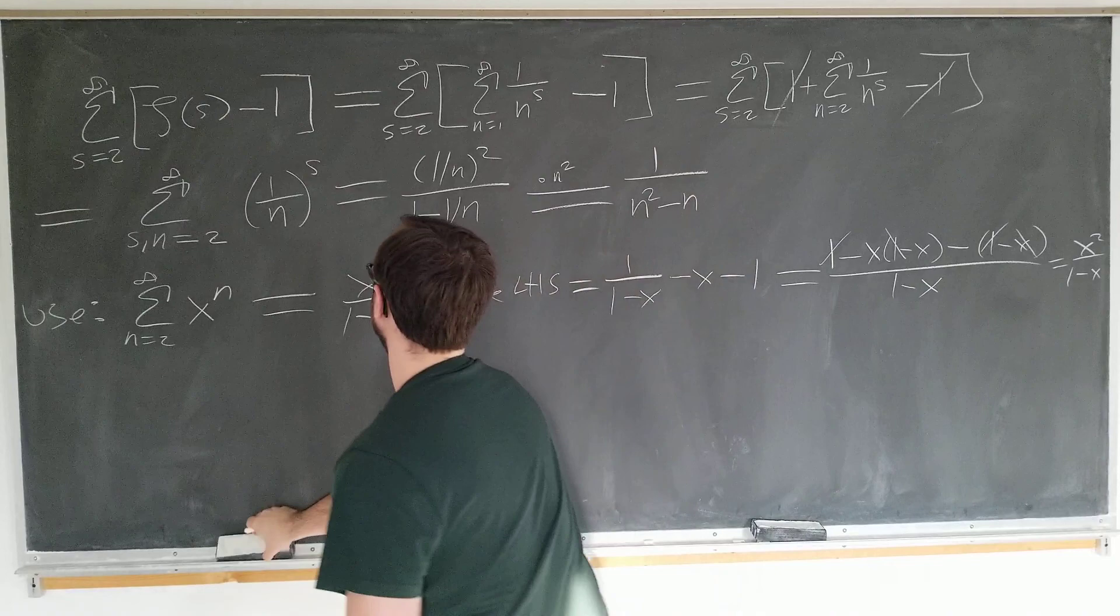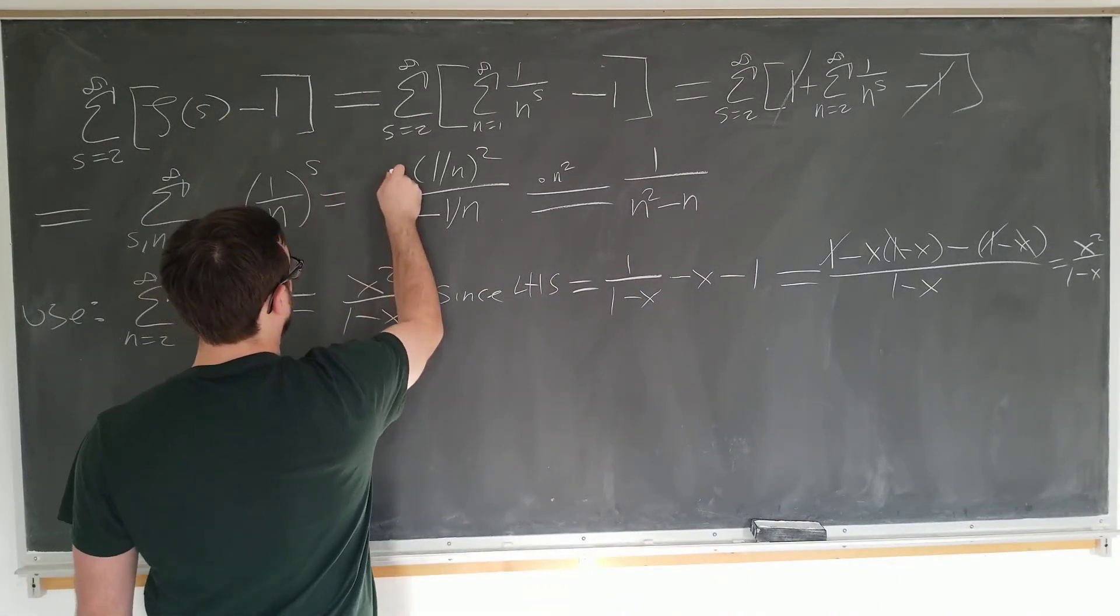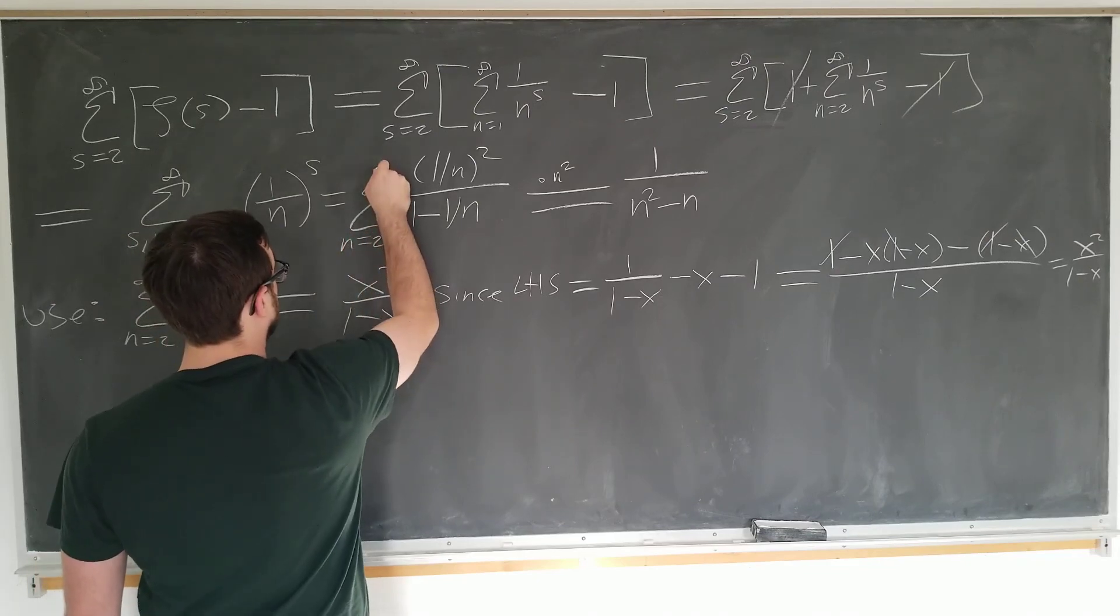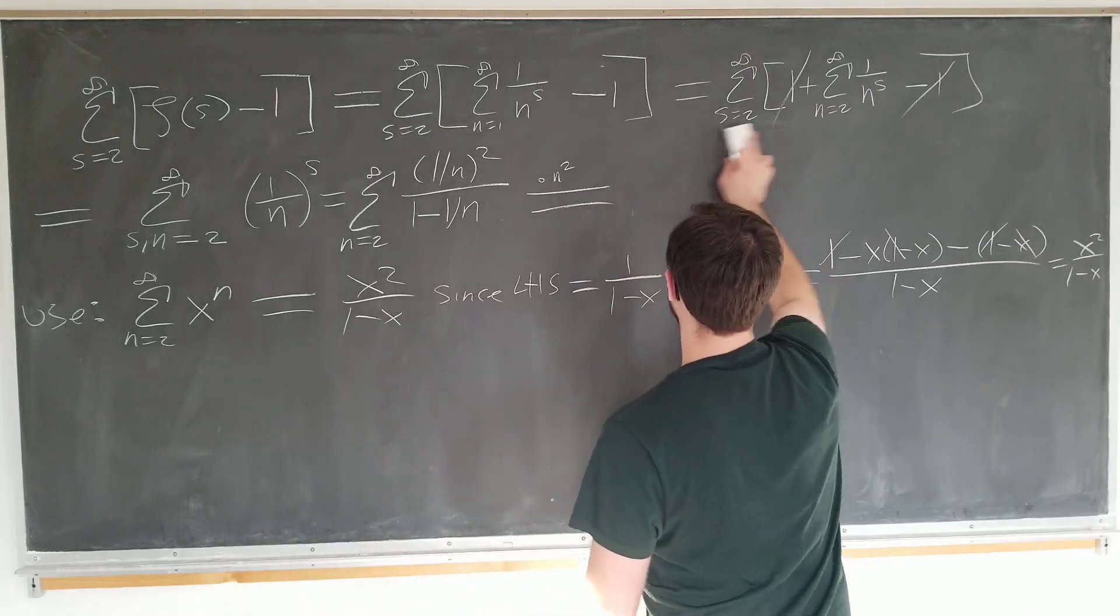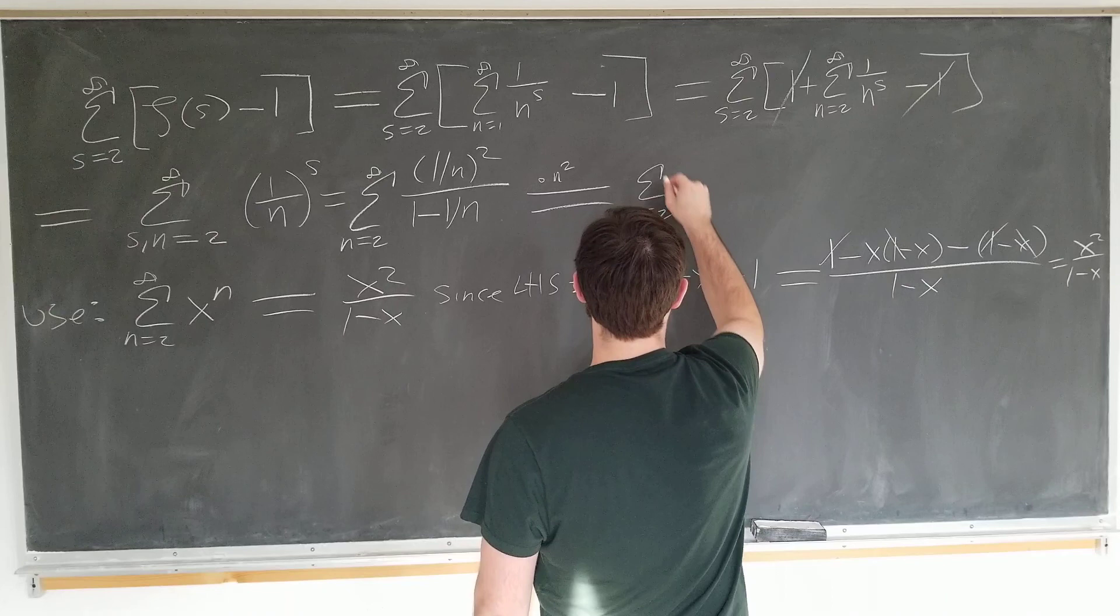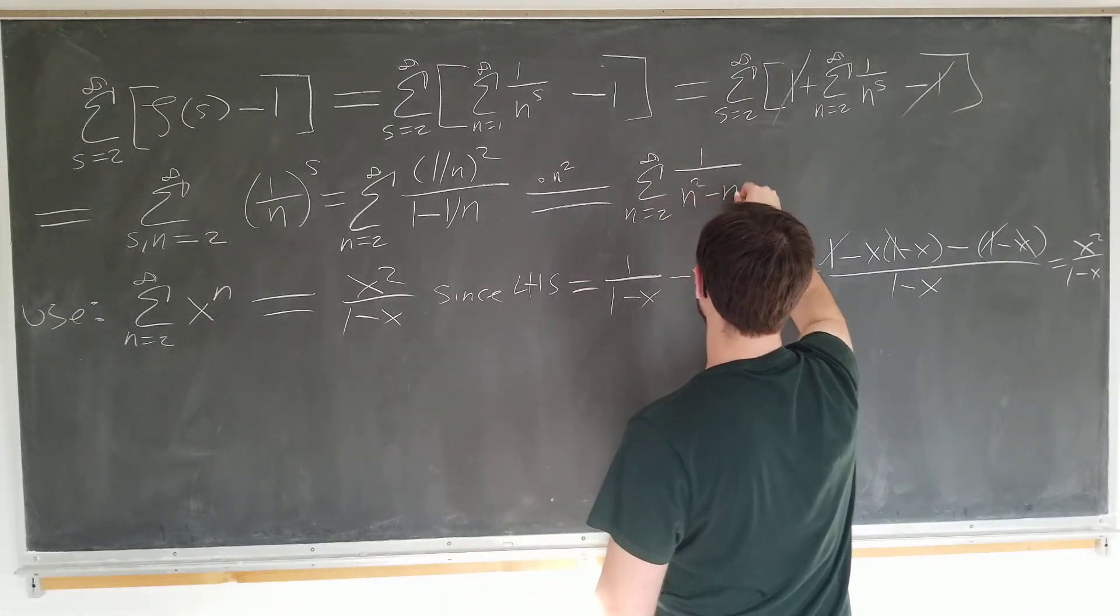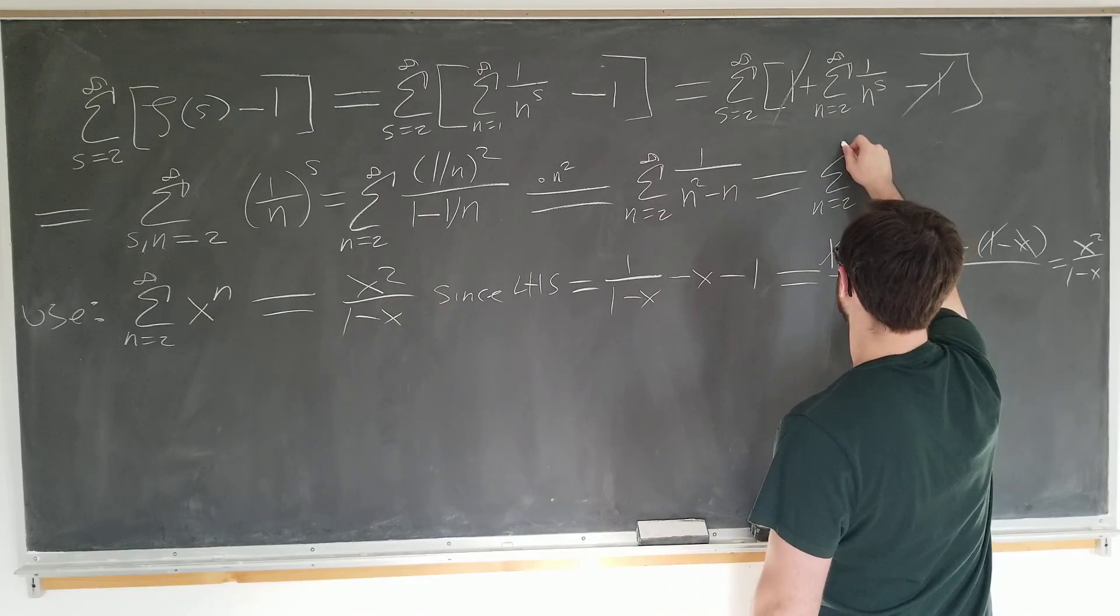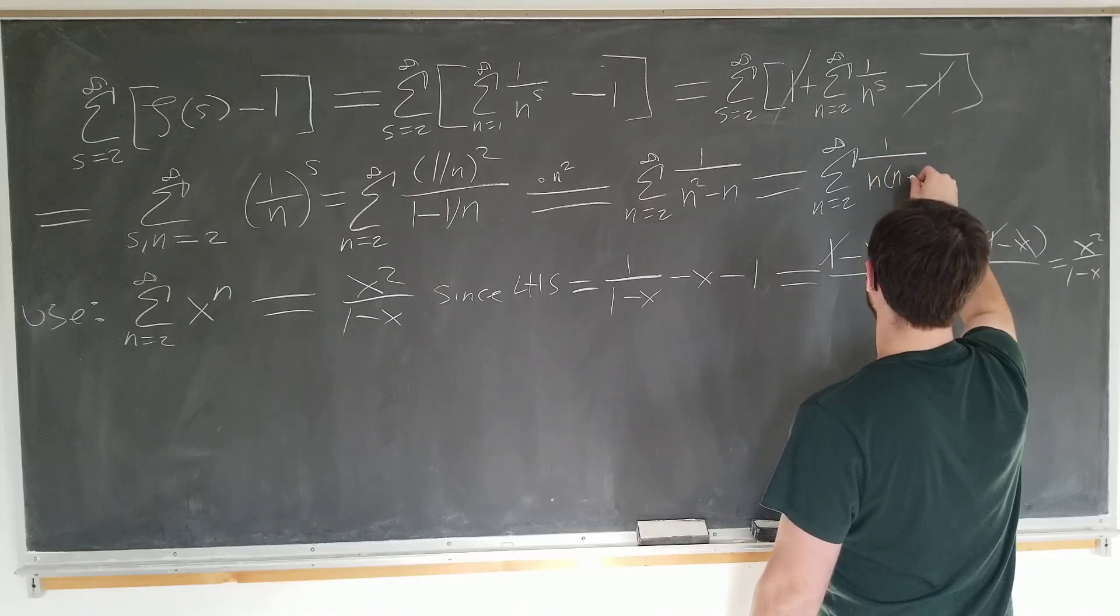Sorry, that's a sum. I dropped a sum. It's very important to keep the sum. So we get rid of one sum, we still have the other one. 1 over n squared minus n, which we can rewrite as 1 over n times n minus 1.